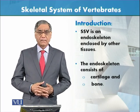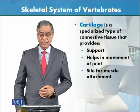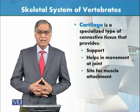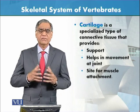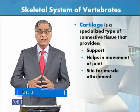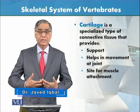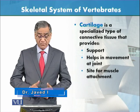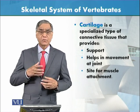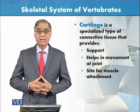The endoskeleton is composed of two main things: cartilage and bone. Cartilage is a soft bone and is a specialized connective tissue that provides many functions, which include support, help in movements in joints, and site for muscle attachment.